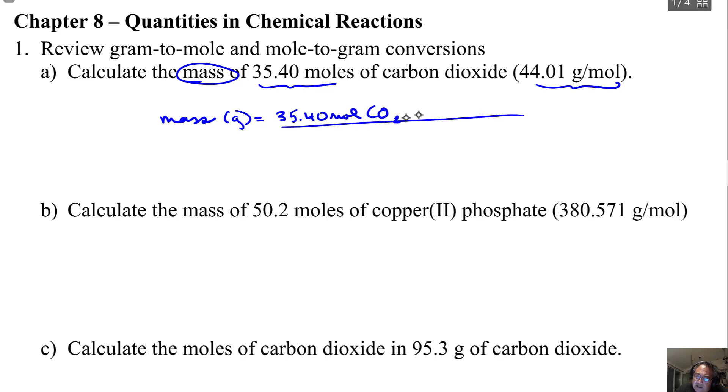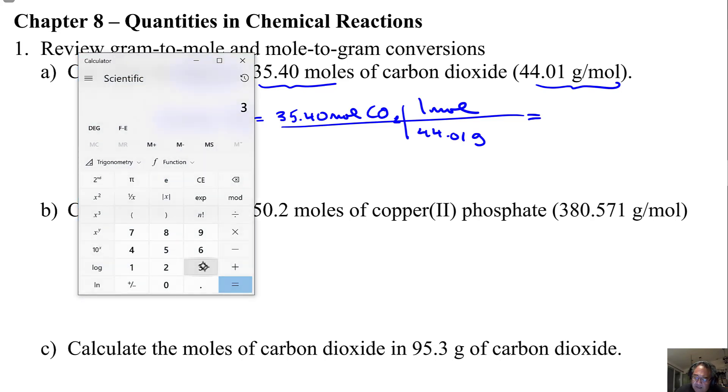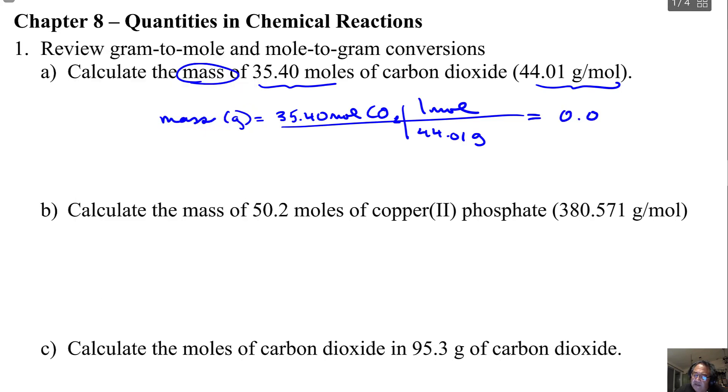I'm going to use my railroad tracks. Then the 44 goes at the bottom and the 1 mole goes at the top. Then I'll get out my calculator: 35.4 divided by 44.01, that gives me 0.80436. This was grams, and it has 4 sig figs, so 0.8044 grams.